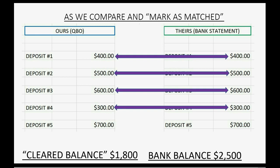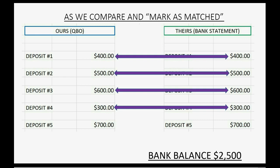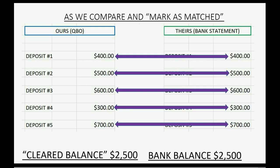Now at the moment we mark off the last item on the bank statement, we add that to the cleared balance. And it's only when the items that we marked as cleared match the balance of the bank — it's only at that moment that we know we've included everything in our matching off and checking off and comparing, and therefore we did the bank reconciliation process correctly.